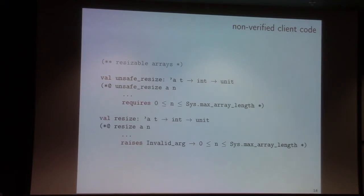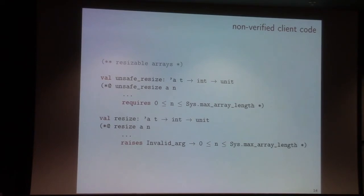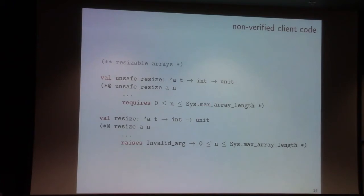One is the unsafe version, which keeps the same precondition as before. And one is the safe resize version, which keeps the same postcondition, but where I'm actually going to raise an exception whenever this condition does not hold. So internally in the code, I'm going to make a test: if this condition does not hold, then raise the exception; if it holds, then I can safely call the unsafe version.